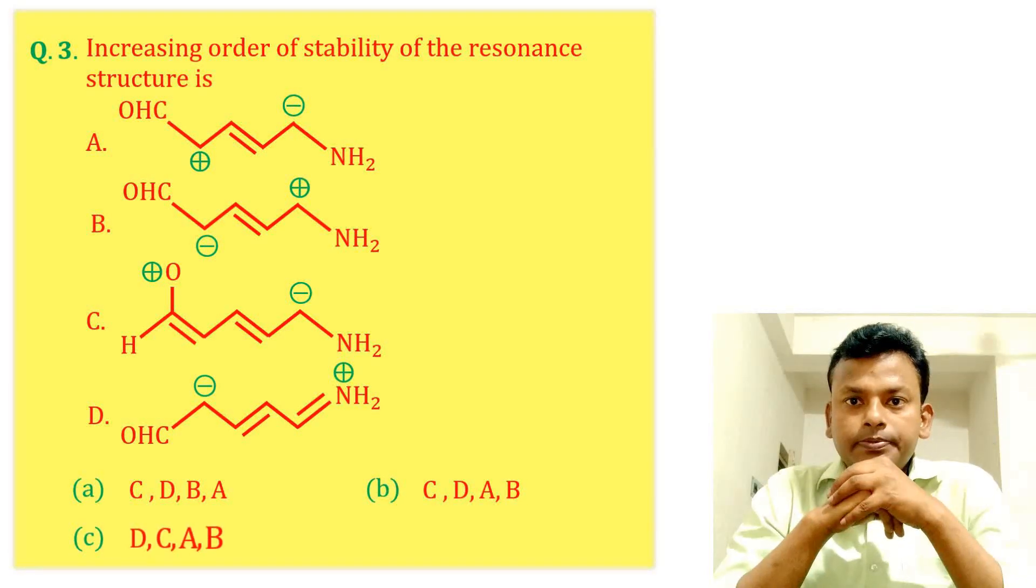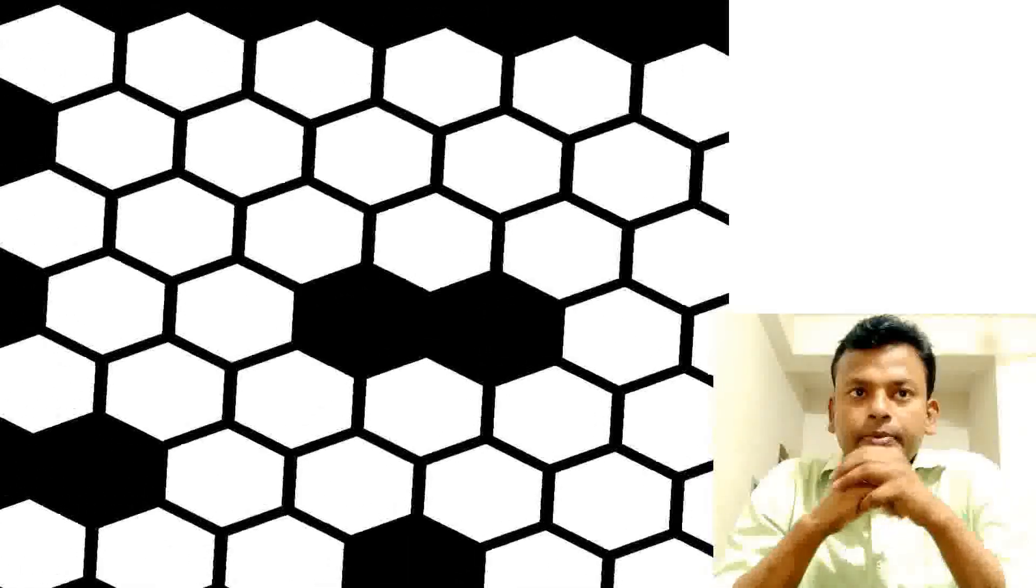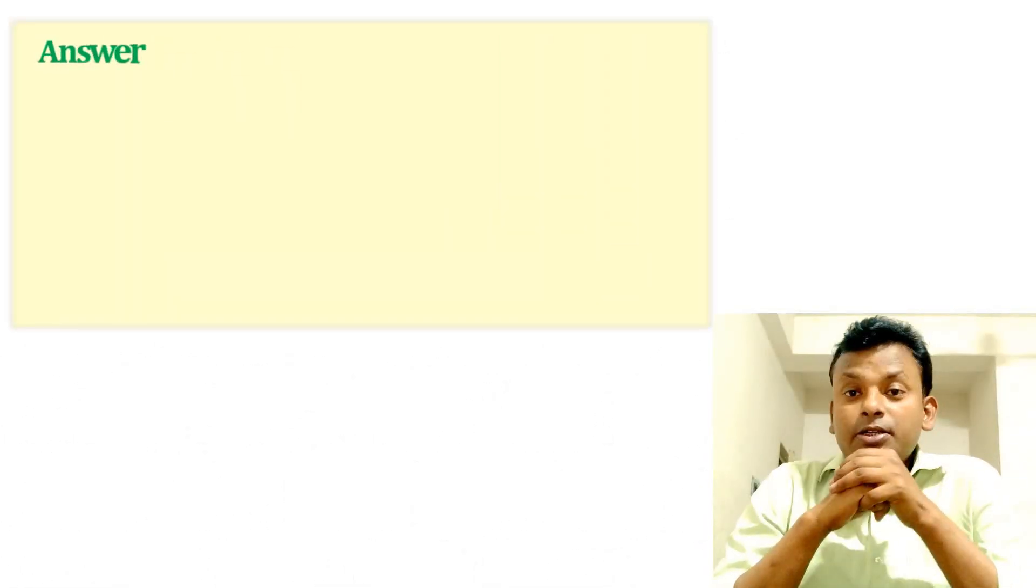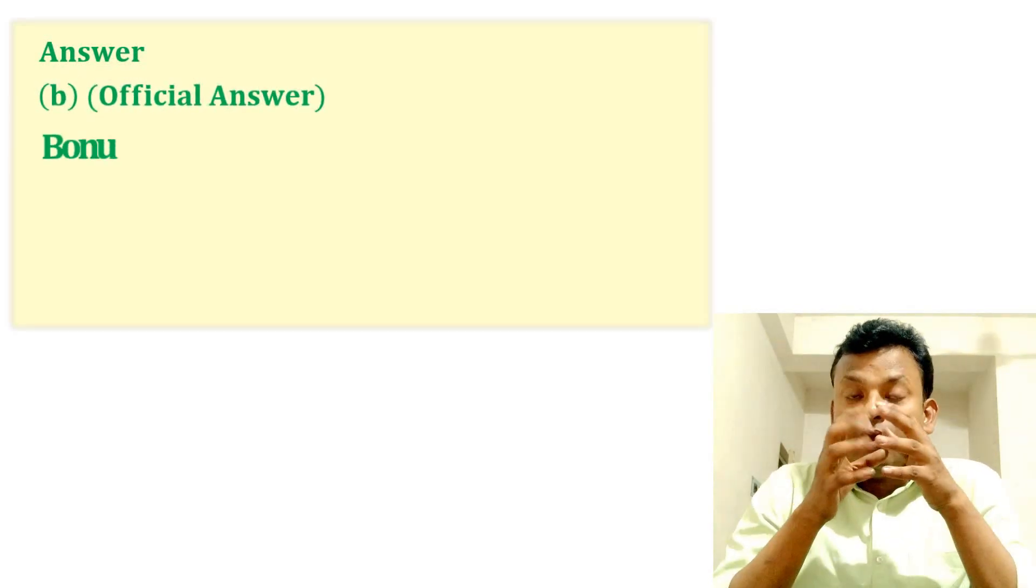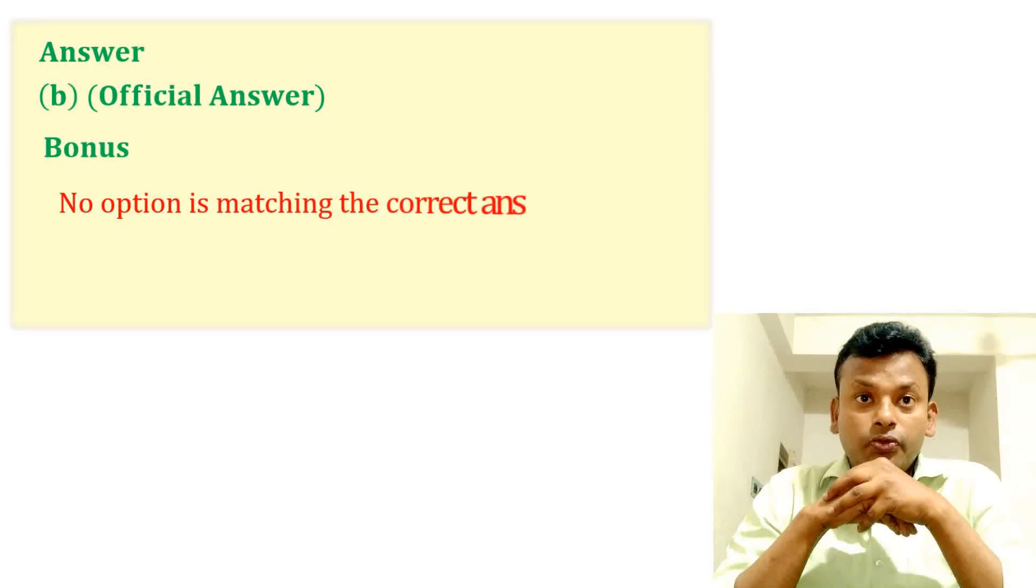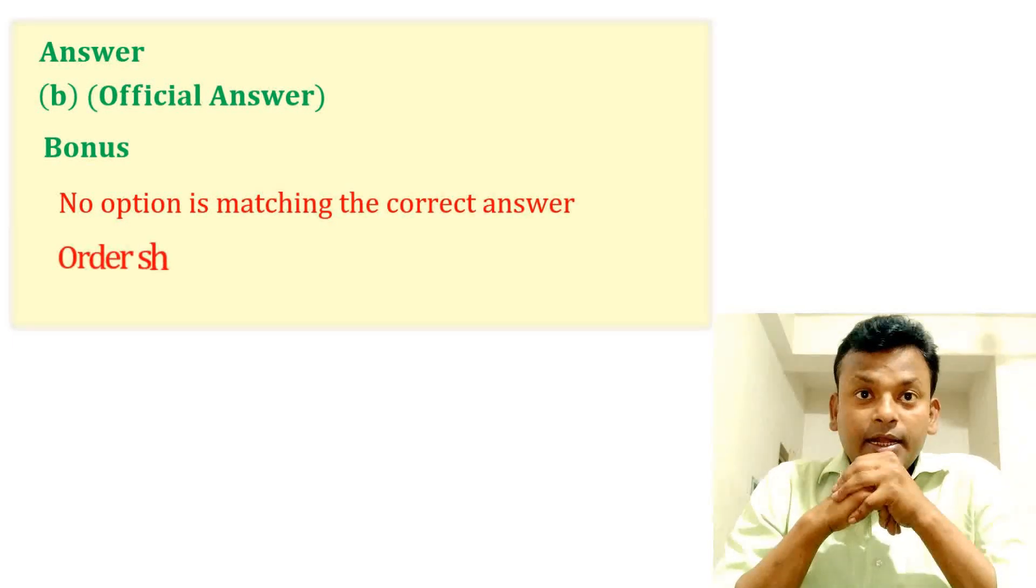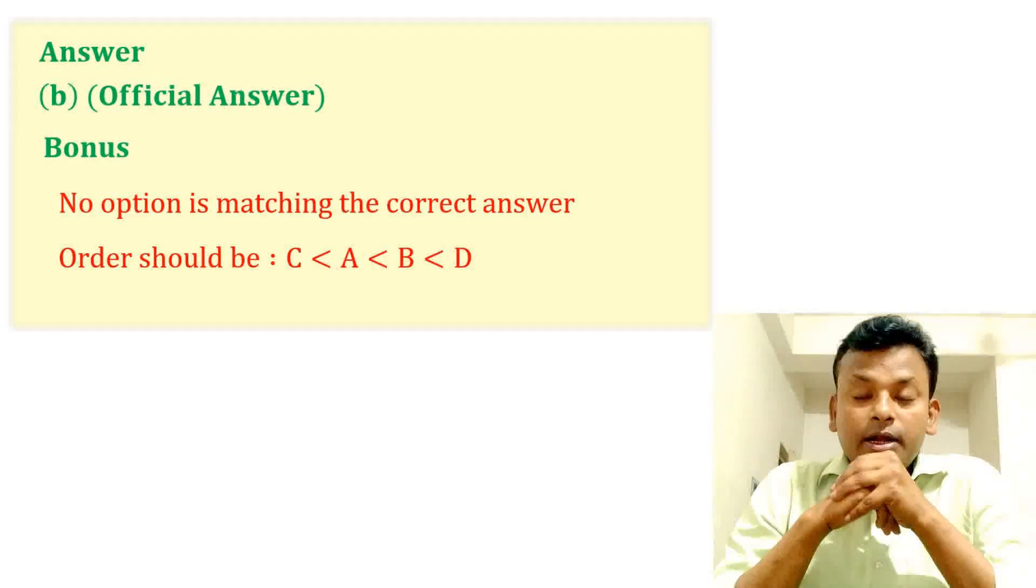Option B is the official answer but it is wrong. Here, no option is matching the correct answer. The order should be C greater than A greater than B greater than D. So the increasing order should be this.